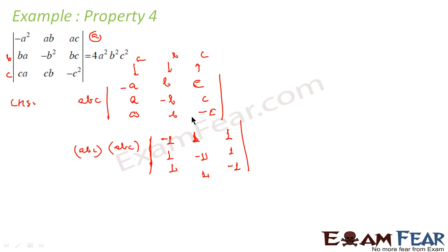So we now have a²b²c² multiplied by a simple 3×3 determinant with entries ±1. Solving this simpler determinant is much easier than the original. We could simplify further using another property we'll learn in the next few slides, but for now let's solve this directly.